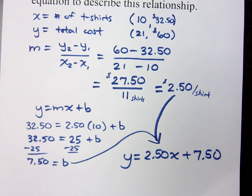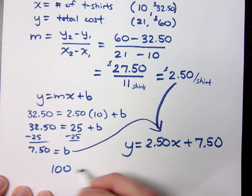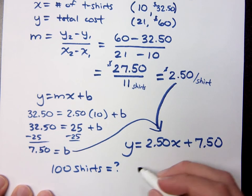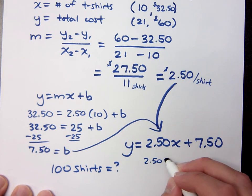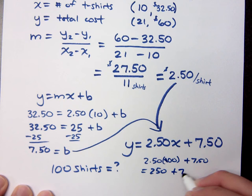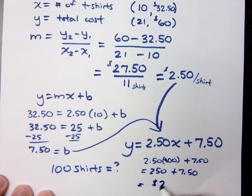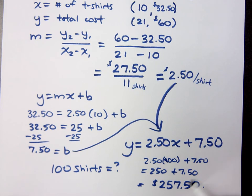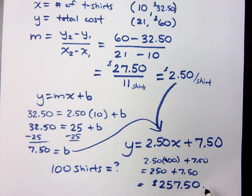I could take this equation and ask: what if they want 100 shirts? How much would it cost? That's $2.50 times 100 plus $7.50, which comes out to $257.50. They could figure out that as they make more shirts, the cost per shirt stays the same, but this fixed cost becomes diminished per shirt the more you order — so it makes more sense to place one big order rather than multiple small ones.